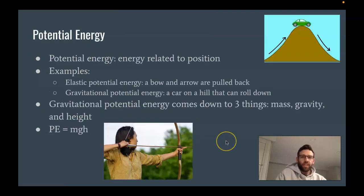Potential energy is related to position. So you could have elastic potential energy, like a bow and arrow shown in this diagram or this picture here. Gravitational potential energy is when you have something above some level and because of gravity, it has some potential energy. So in this case, this car here has gravitational potential energy because it's up on a hill and it could go down this hill and that potential energy would get turned into kinetic energy and it would start to move.